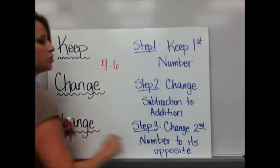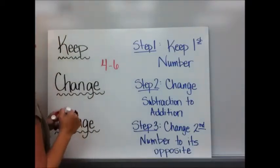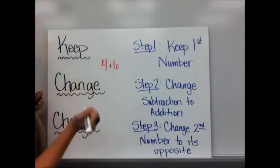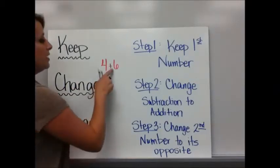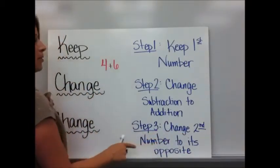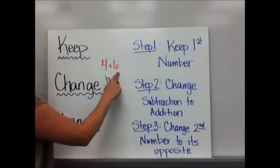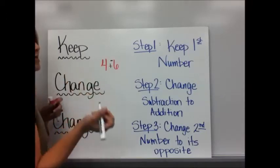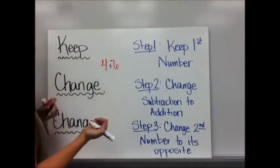Step 2, I'm going to change subtraction to addition. Since you're going to have this on your paper, you can just put a little line right there. Now my subtraction sign looks like an addition sign. And then Step 3 is I'm going to change the second number to its opposite. What's the opposite of 6? Negative 6. No need to rewrite the problem. You can just work at it from there.